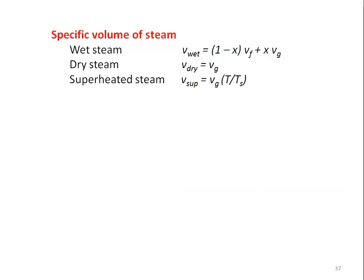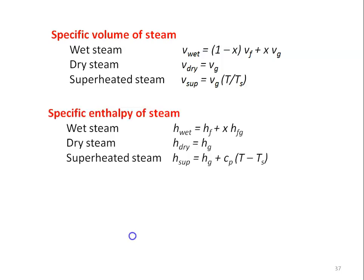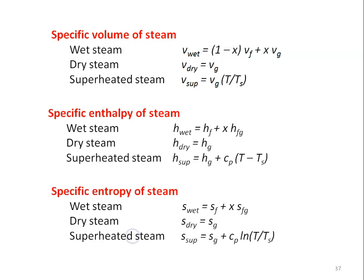Before we take up the problem, we review the properties of the steam. For specific volume of the steam, there are three types: specific volume of wet steam V_wet = (1 - x)·vf + x·vg; specific volume of dry steam V_dry = V_wet; and specific volume of superheated steam V_super = V_wet · (T / Ts), where vf, vg, and Ts values are taken from the steam table at the corresponding given pressure.